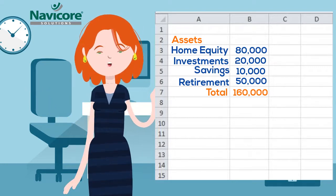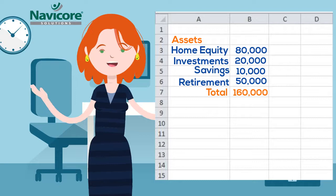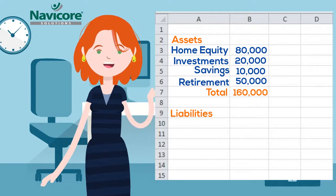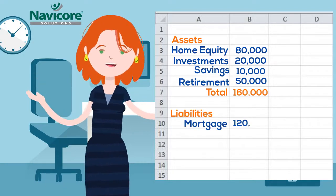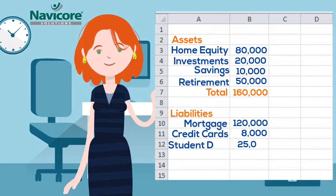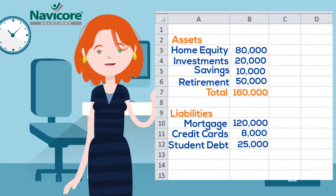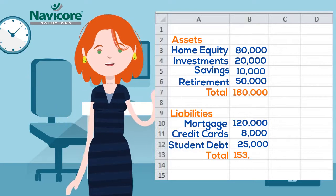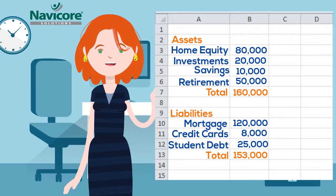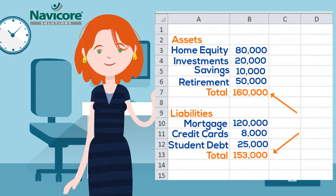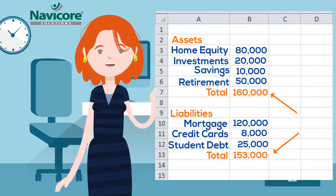The next step is to list all your liabilities, or what you owe. This includes your mortgage, credit card debt, student loans, car loans, and personal loans. Add these values up and then subtract your liabilities from your assets.